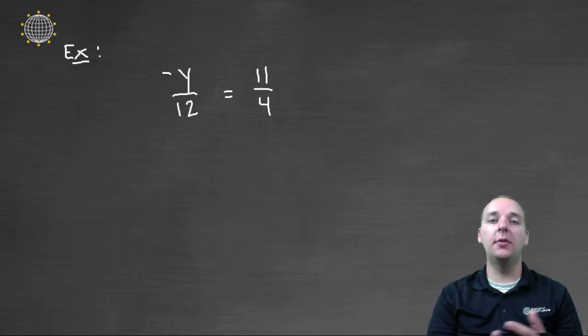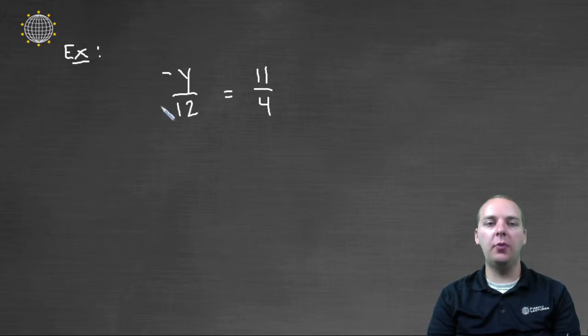Let's look at a few examples where we solve some proportions. So a proportion you'll remember is when we have one ratio set equal to another ratio. So typically these proportions will have some sort of unknown, like a variable, like an x or y or something like that.